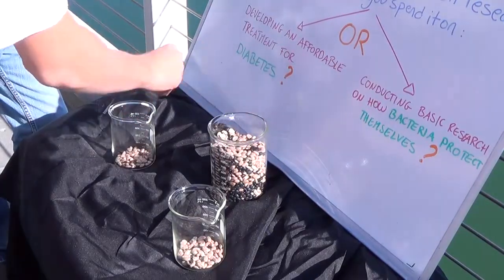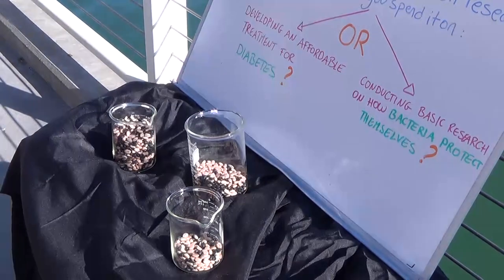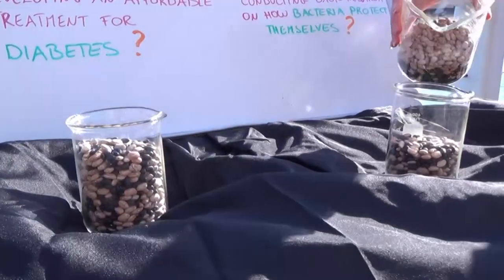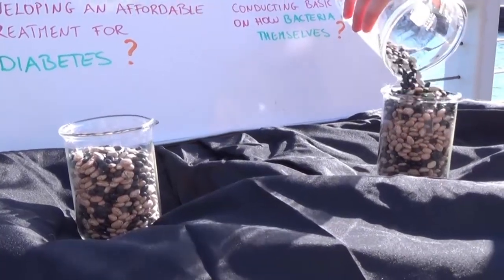The majority of people we surveyed wanted to spend their money on a diabetes treatment, but what really happened 50 years ago? The government decided to spend money on figuring out how bacteria protect themselves against viruses.